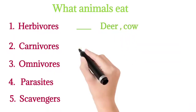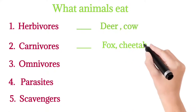Next, carnivores. Animals that eat the flesh of other animals are called flesh-eating animals or carnivores. Examples: fox, cheetah, lion, etc.